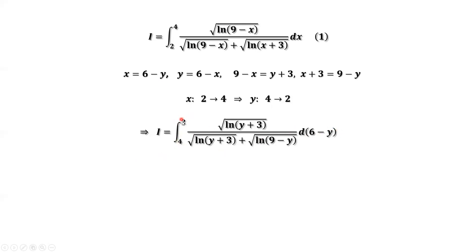So here we have to change from x to y. x is from 2 to 4, y is from 4 to 2. 9 minus x equals y plus 3. Here it should be y plus 3.